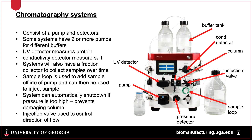There are different chromatography systems available and, depending on the process, will be used with smaller or larger columns. The most basic system consists of a pump and detectors. Some systems can have multiple pumps, which are used with two or more different buffers. The detectors are typically a UV detector to measure protein, as well as a conductivity and pH detector.